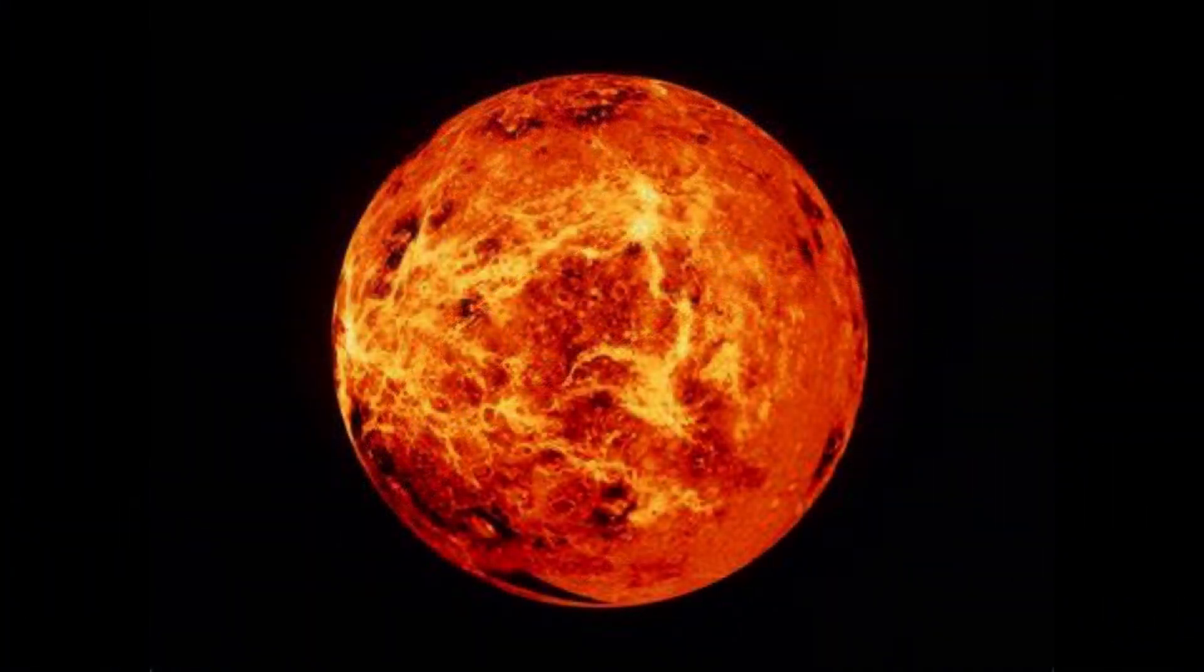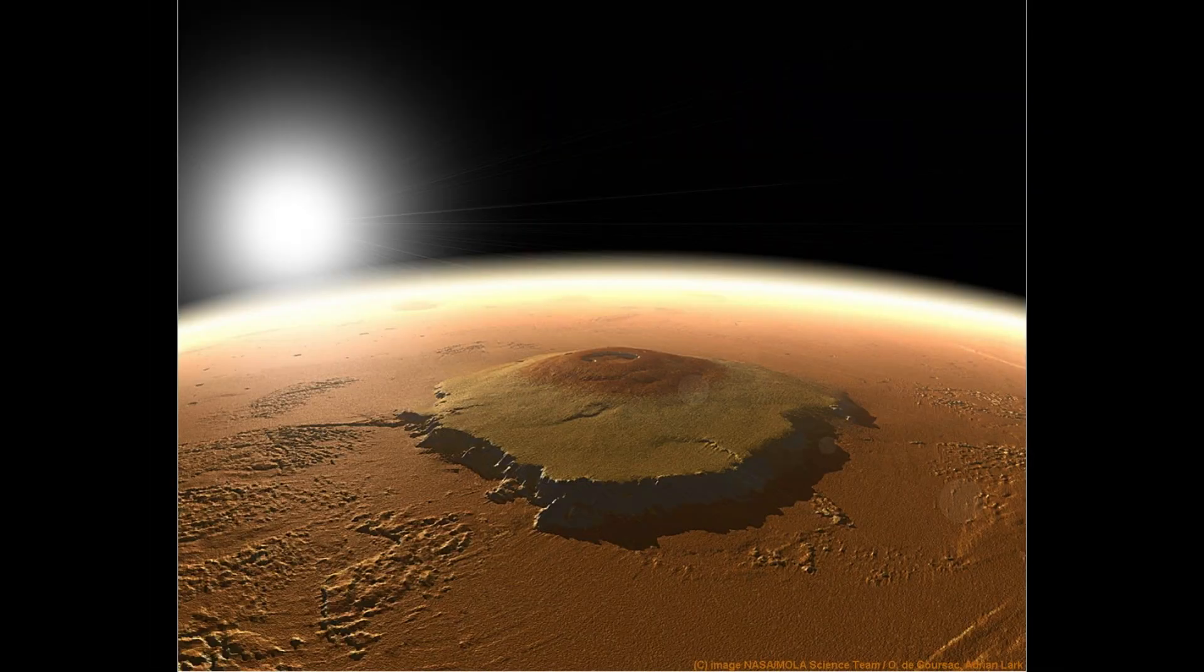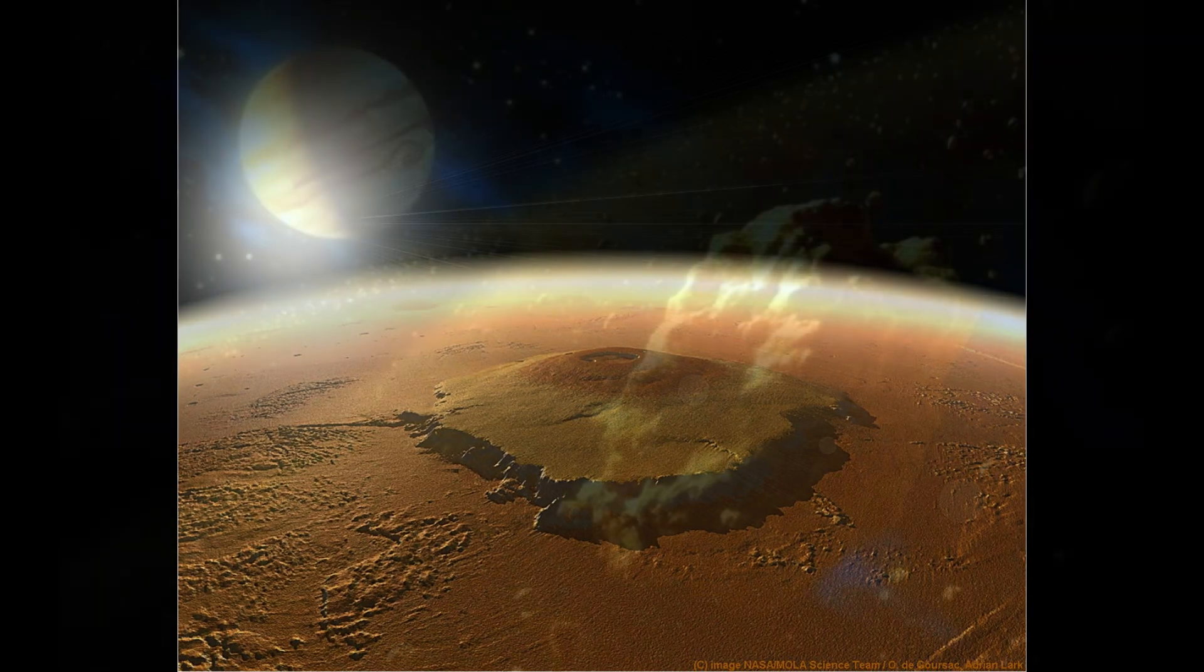Venus is the hottest planet in our solar system, with temperatures that can melt lead. Mars has the largest volcano in the solar system, Olympus Mons.